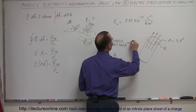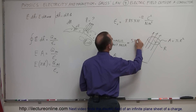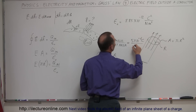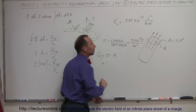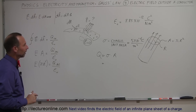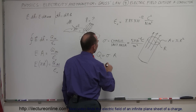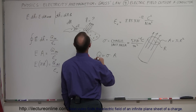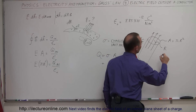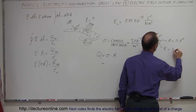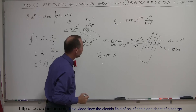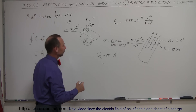Let's say the charge density sigma is equal to 5 times 10 to the minus 6 coulombs per meter squared — that's the charge density on the surface. And let's say we want a radius R equal to 10 centimeters.